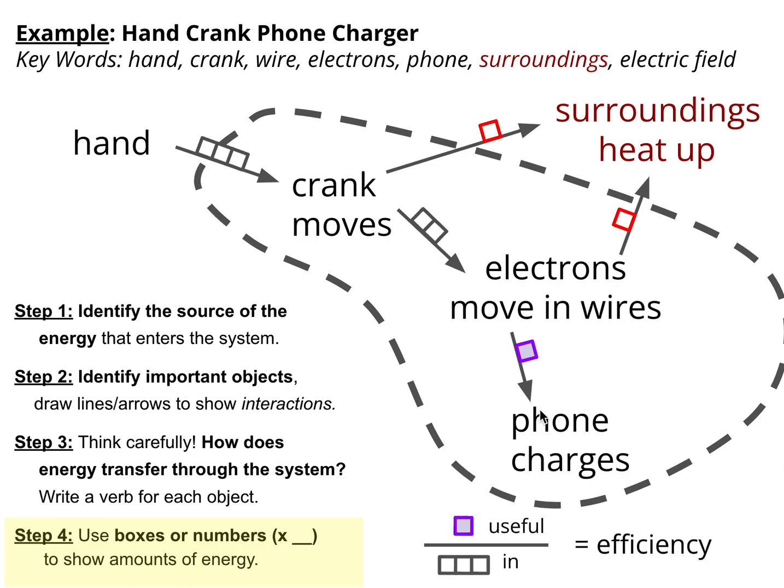And this relationship, this ratio of how much useful energy we get out of the system, in this case to charge a phone, compared to how much energy that went into the system is a term that we call efficiency.